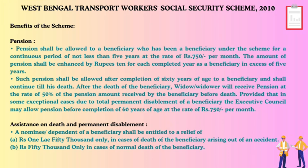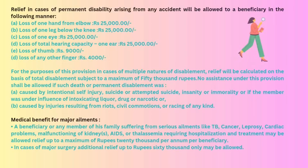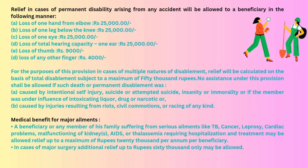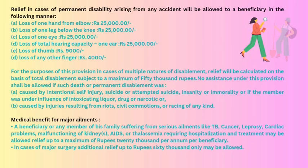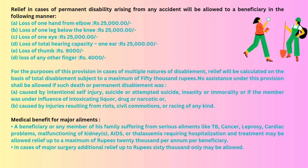Relief for permanent disability arising from accident under the Transport Workers scheme: loss of one hand from elbow — 25,000 rupees; loss of one leg below the knee — 25,000 rupees; loss of one eye — 25,000 rupees; loss of total hearing capacity — 25,000 rupees; loss of thumb — 9,000 rupees; loss of any other finger — 4,000 rupees. In cases of multiple disabilities, relief is calculated on the basis of total disablement subject to a maximum of 50,000 rupees. No assistance shall be allowed if death or permanent disablement was caused by intentional self-injury, suicide, insanity, immorality, influence of intoxicating liquor/drug/narcotic, or injuries from riots, civil commotions, or racing.